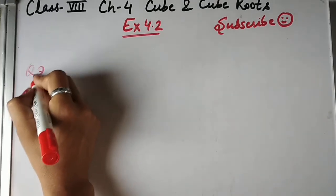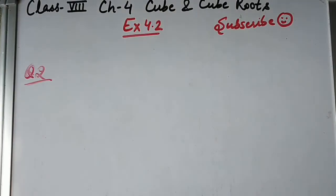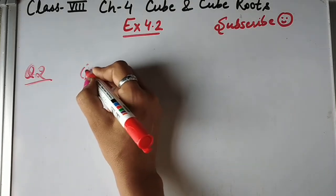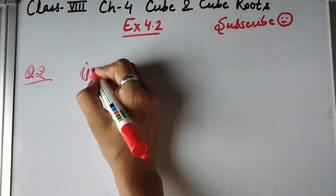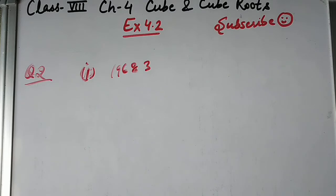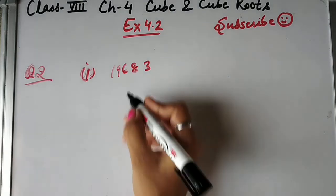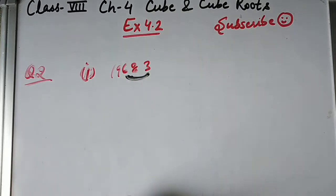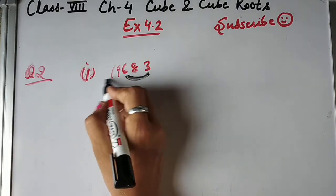Now let's look at Question Number 2: find the cube root of each of the following cube numbers through estimation. We don't have to do full calculation — we just need to estimate. Starting from the unit place, we form groups of 3 digits.